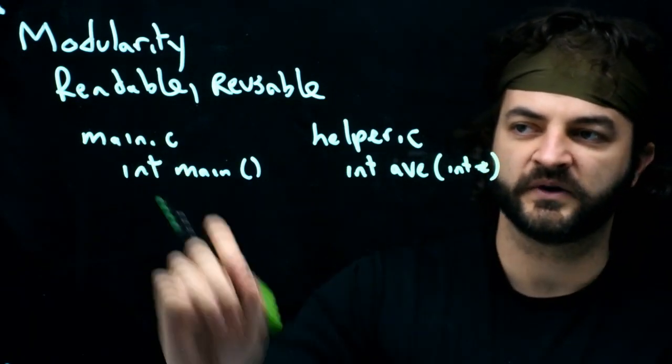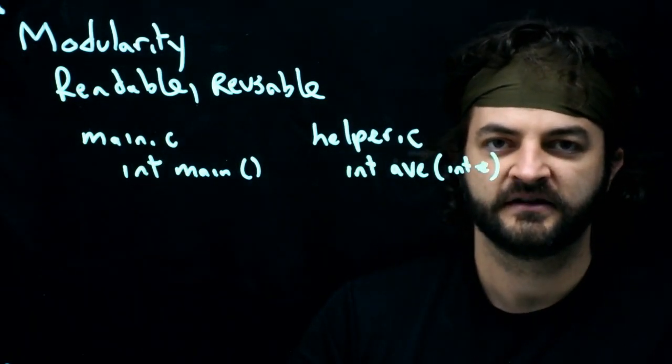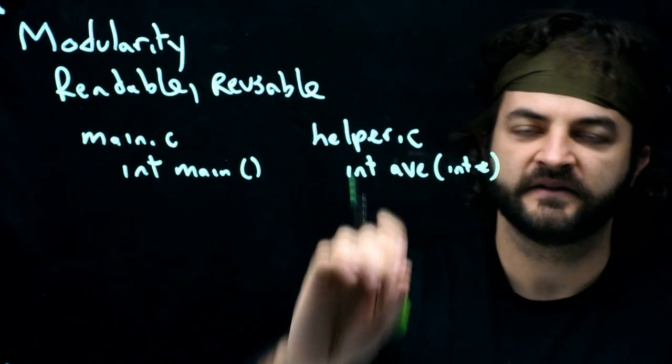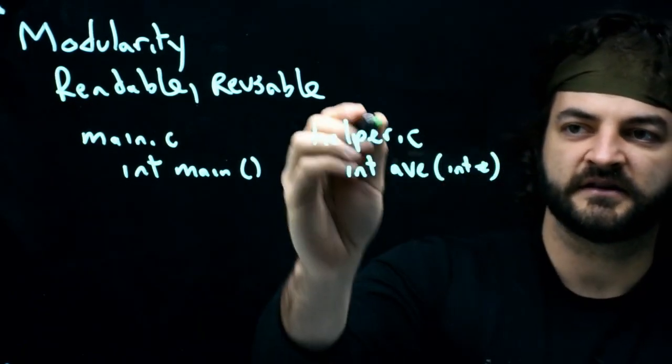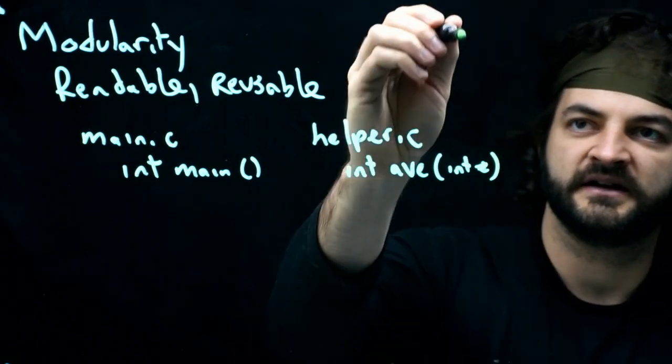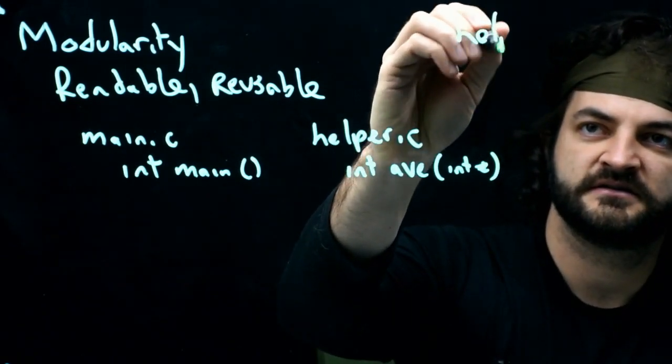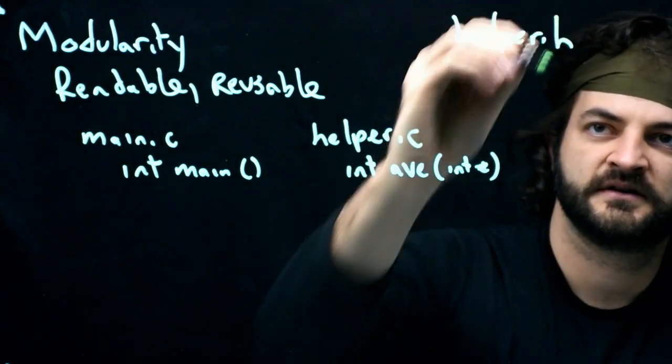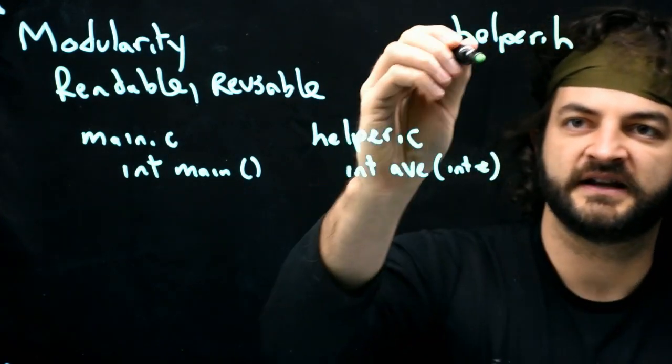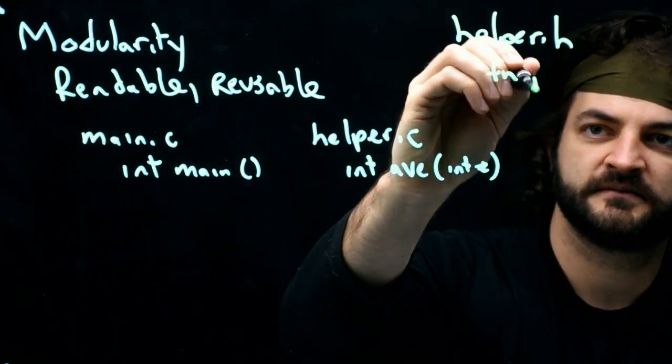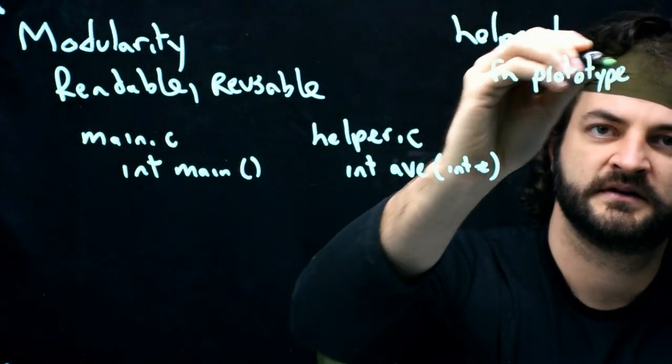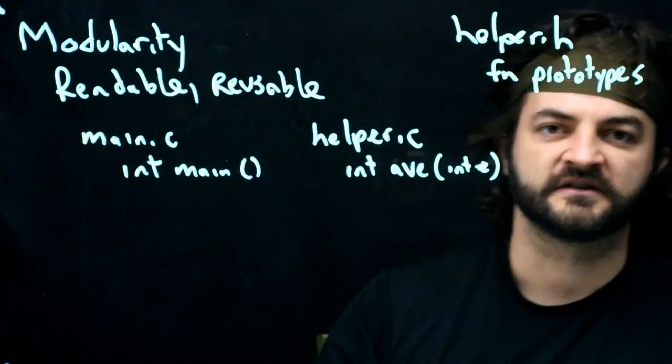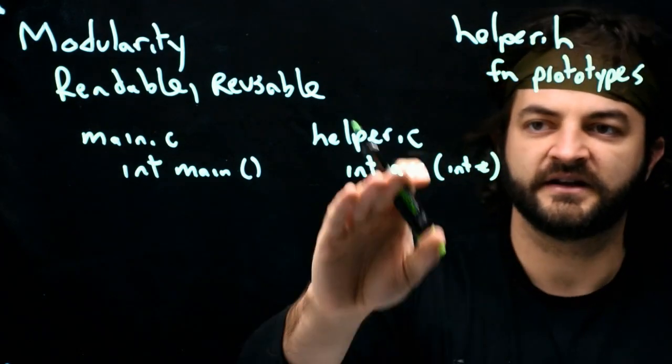That's a function we'll want to call from main.c. So how does main.c know that function exists? We'll have a list of all the functions available in helper.h. Helper.h contains the function prototypes, essentially the declarations of the functions that exist in helper.c.